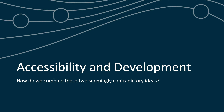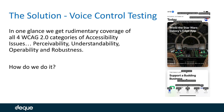The solution is voice control testing, new in iOS 13. In one glance, we get rudimentary coverage of all four WCAG 2.0 categories of accessibility issues: perceivability — voice control and other accessibility applications know all of these things are there; understandability — you can see the descriptions of all of them; operability — if voice control knows those things are there, they will be operable in voice control, switch control, and VoiceOver; and robustness.